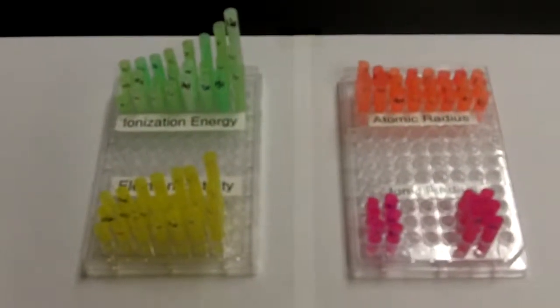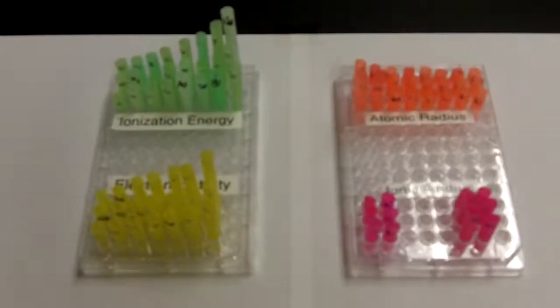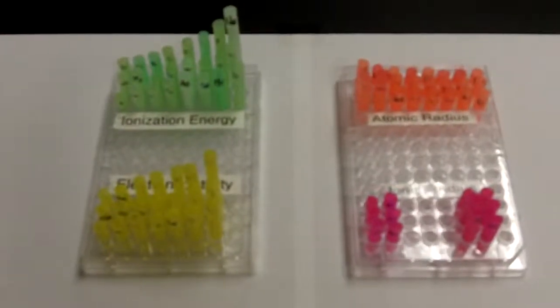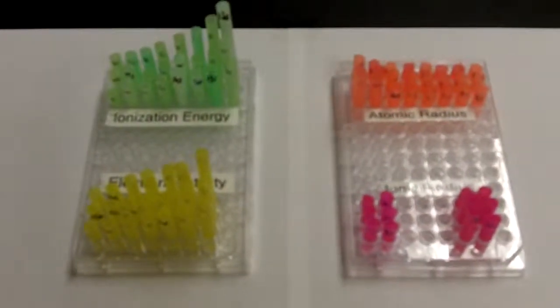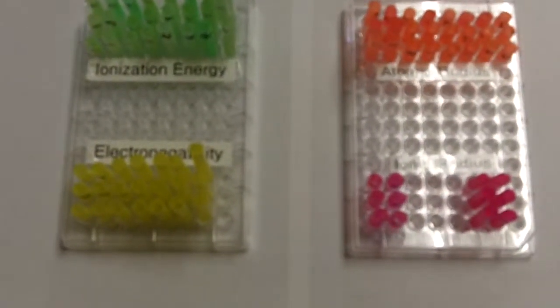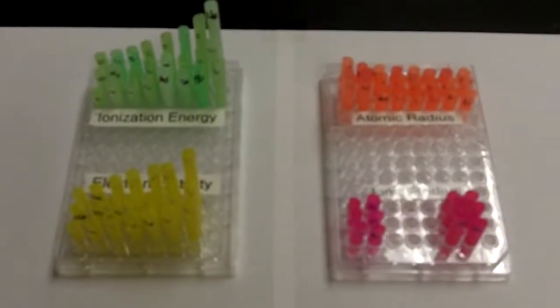We've used the data provided to you to help construct three-dimensional models depicting periodic trends for ionization energy, which is the energy needed to remove an electron, electronegativity, which is the ability to attract an electron, atomic radius, which is the physical size of the atom, and ionic radius, which is the physical size of the ions after they have gained or lost an electron.